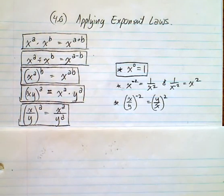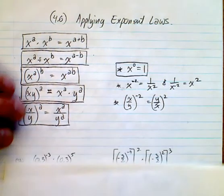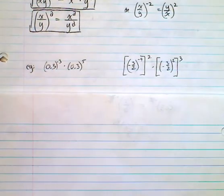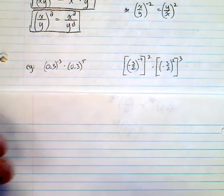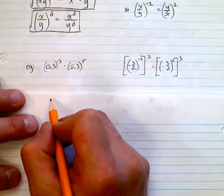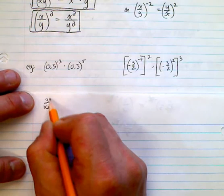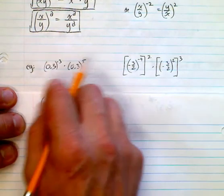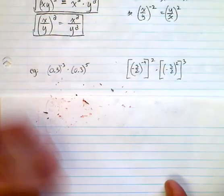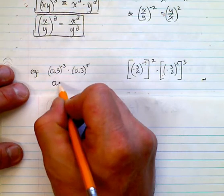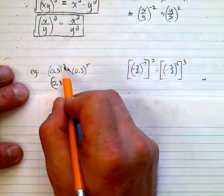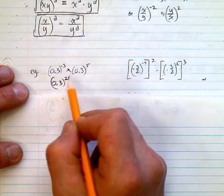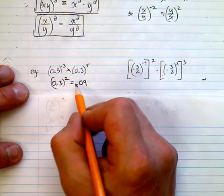The only thing that's going to work here is if I actually give you some examples. So let's look: 0.3 to the power of negative 3 times 0.3 to the power of 5. We can simplify this first - this is going to be 0.3 to the power of what? You're multiplying, so you add the exponents. Negative 3 plus 5 is positive 2.